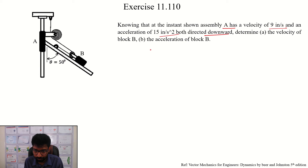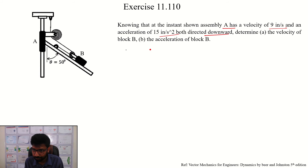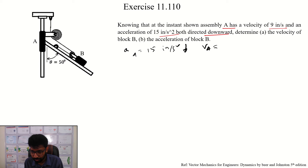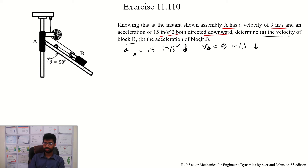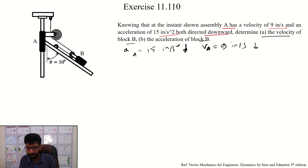Let me change the color. We are going to determine the velocity of block B and acceleration of block B. When we do this, we consider all the ropes so that the total length of the rope is constant. We are going to differentiate the displacement to find velocity.